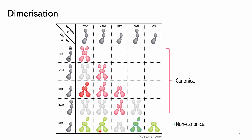Mammals have 5 proteins in the family, which can dimerize in several but not all combinatorial pairs — only 10 out of 15 possible dimers exist. Six are involved in the canonical pathway while 4 are in the non-canonical pathway.